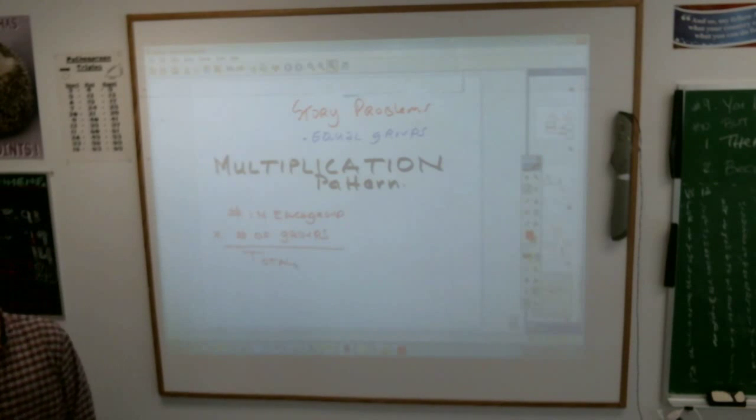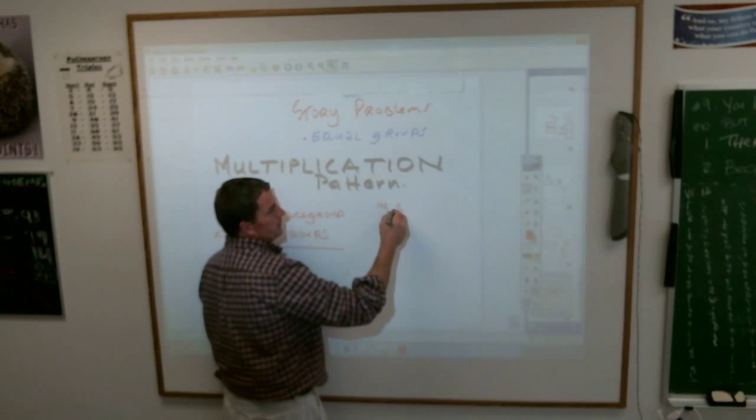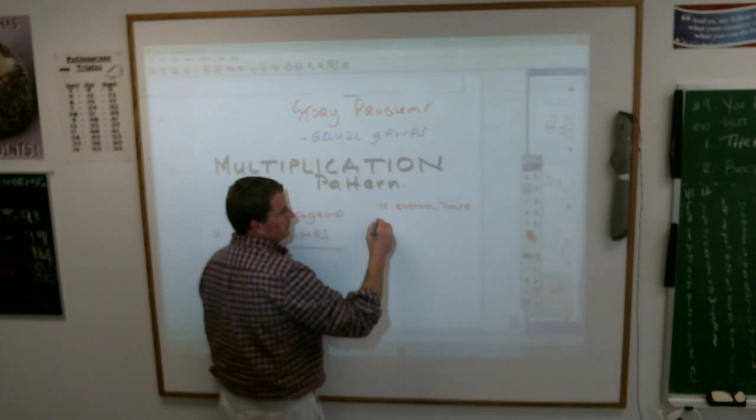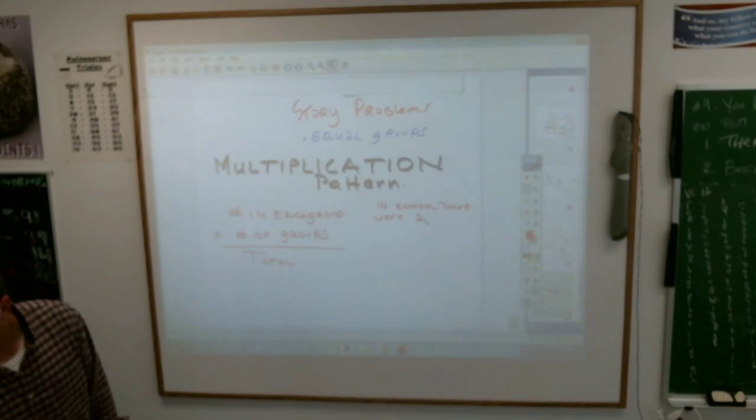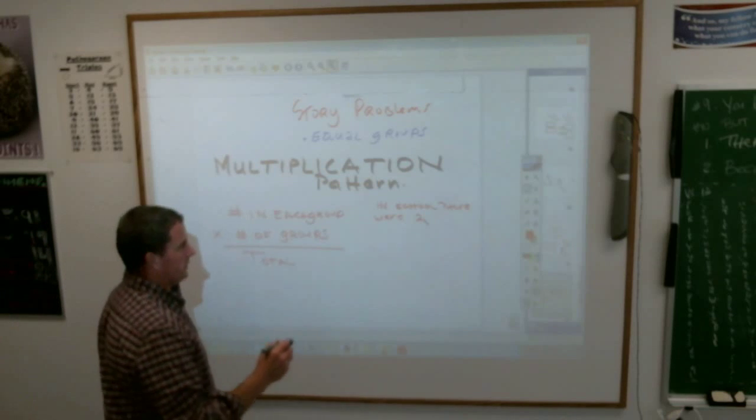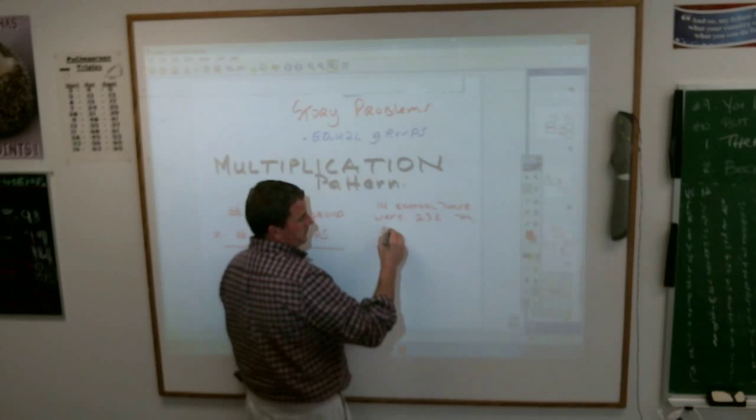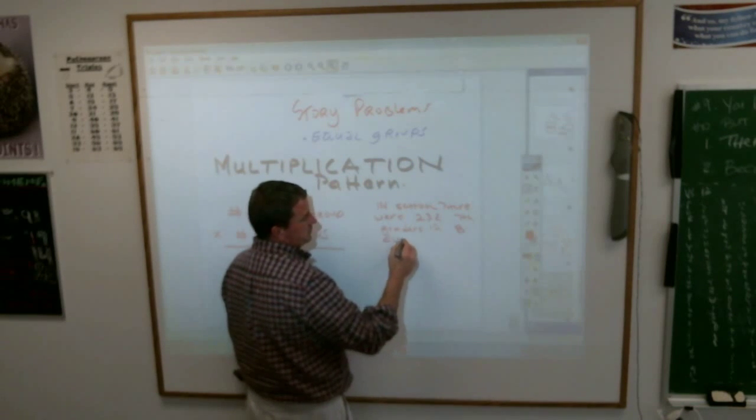Here is an example sort of problem. In the school, there were 232 seventh graders in eight classrooms.